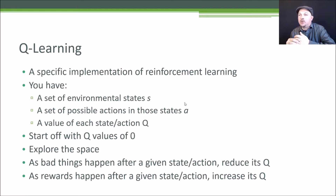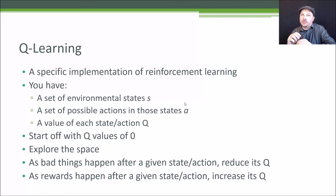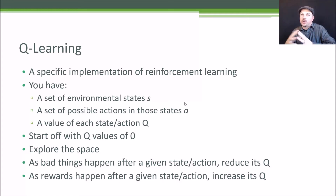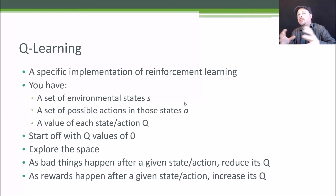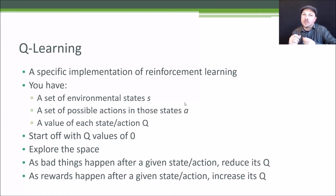For each state — a given set of conditions surrounding Pac-Man — a given action will have a value Q. Moving up might have a positive Q value; moving down might have a negative Q value if it means encountering a ghost. We start with a Q value of 0 for every possible state. As Pac-Man explores the maze, when bad things happen — like getting eaten by a ghost — we reduce the Q value for the state Pac-Man was in at that time, penalizing whatever action it took. As good things happen, like eating a power pill or a ghost, we increase the Q value for that action.